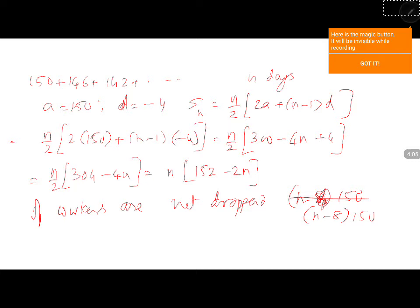I have n into 152 minus 2n is equal to n minus 8 multiplied by 150. 152n minus 2n square is equal to 150n minus 1200. This gives us 2n square minus 2n minus 1200 is equal to 0. Take 2 common, you get n square minus n minus 600 is 0.